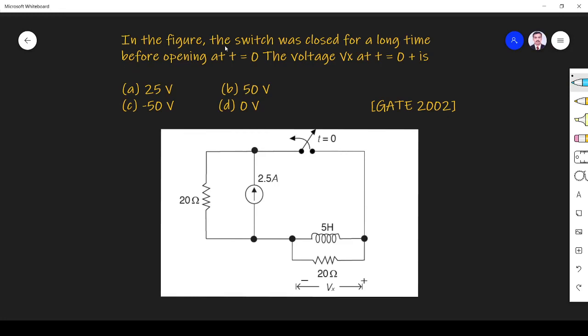The question is in the figure the switch was closed for long time before opening at t equals 0. The voltage Vx at t equals 0 plus is: a) 25 volt, b) 50 volt, c) minus 50 volt, d) 0 volt.